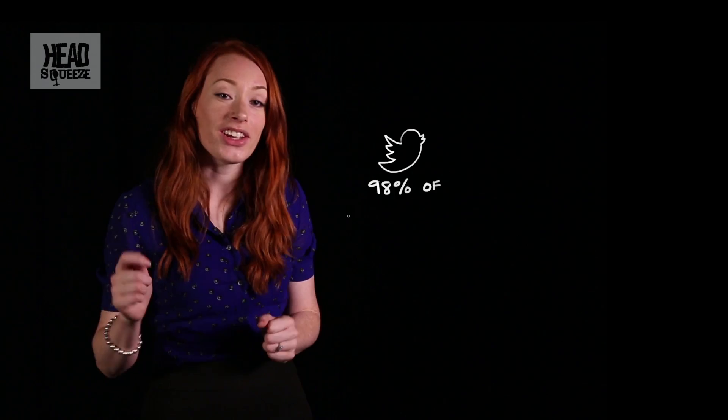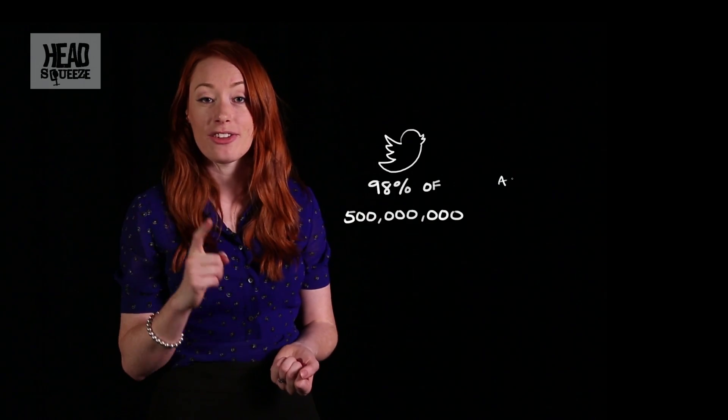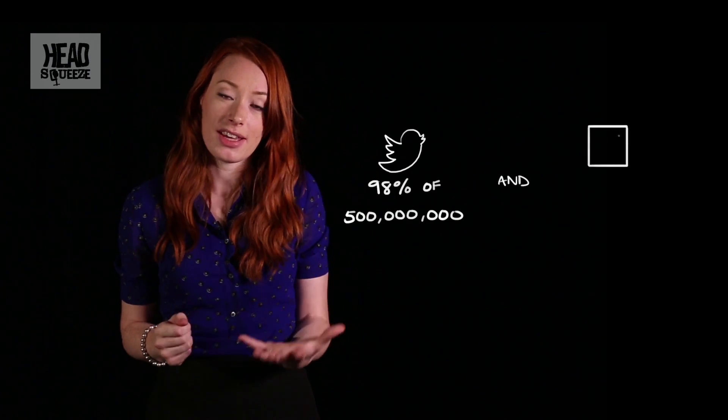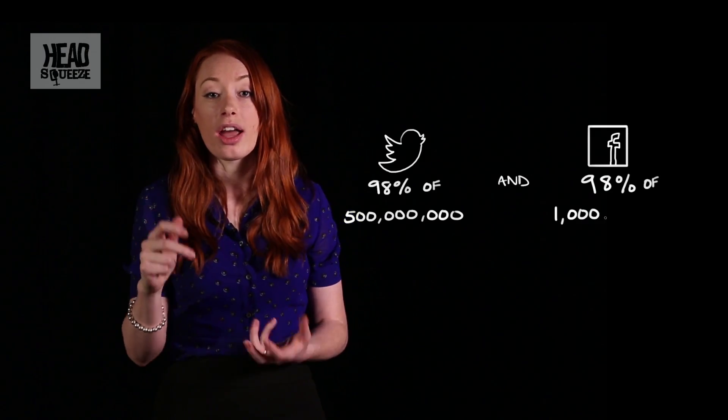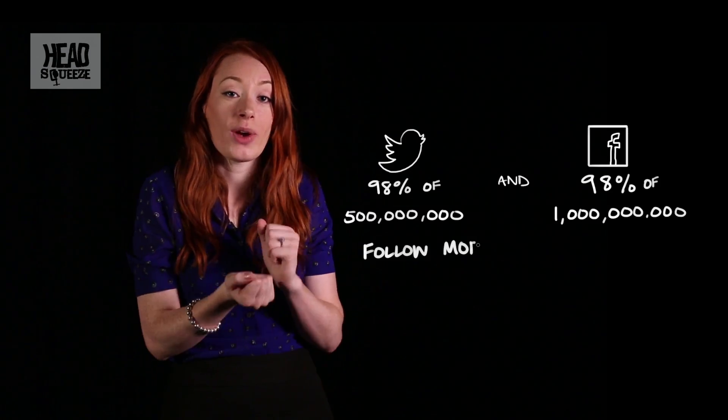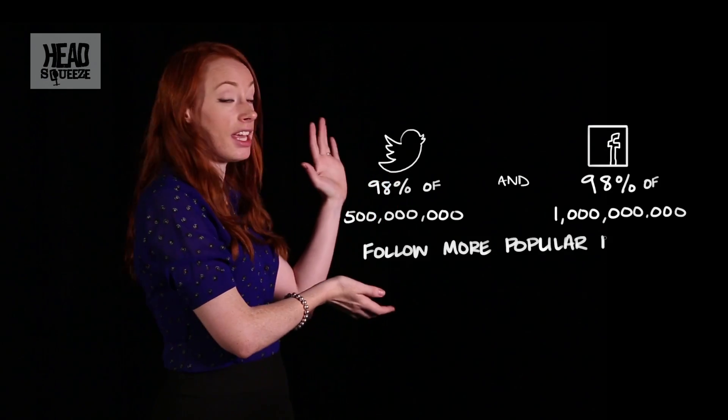Now this is true for 98% of the 500 million Twitter users and 98% of the 1 billion Facebook users. Because actually, as it turns out, the way that we form friendships on Facebook, on Twitter, and in real life, follows a very distinctive pattern, creating networks that look like this.